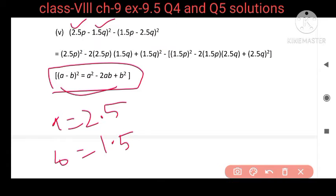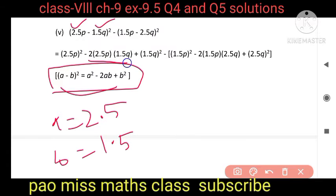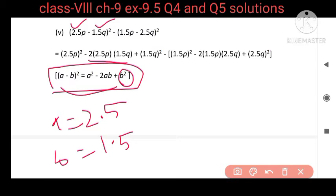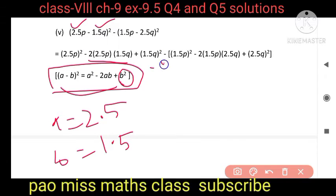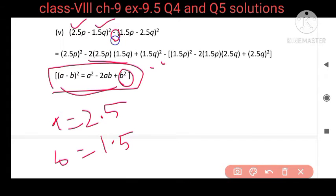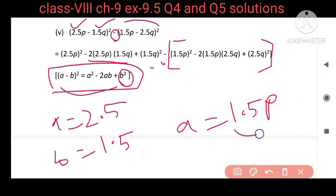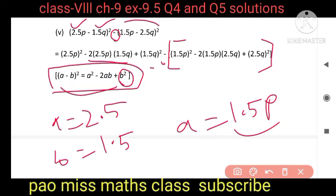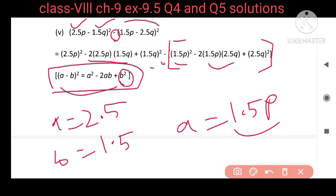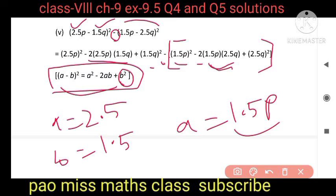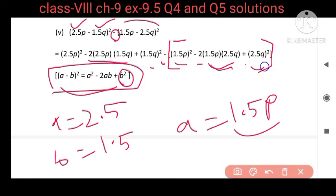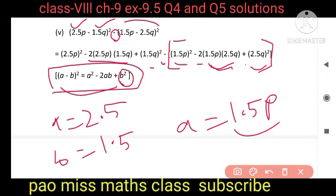So a² = (2.5p)², minus 2ab = 2 × 2.5p × 1.5q, plus b² = (1.5q)². Then minus, in square bracket, for the second expression: a = 1.5p, so a² = (1.5p)², minus 2ab = 2 × 1.5p × 2.5q, plus b² = (2.5q)². Now we have to break all of these.